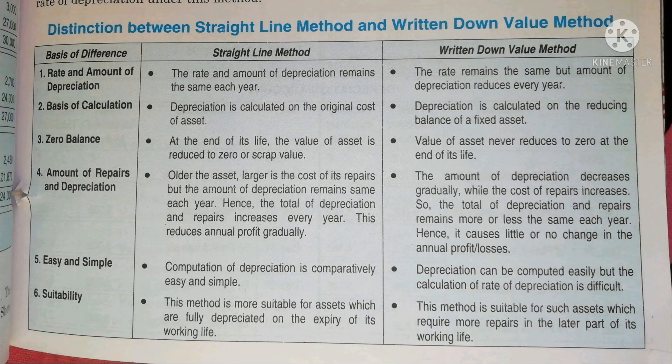Under the Written Down Value Method, the rate remains the same but the amount of depreciation reduces every year. The rate of depreciation remains the same but the value or amount of depreciation reduces every year.